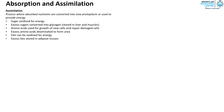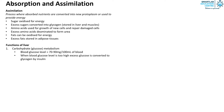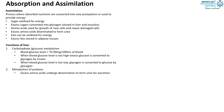The functions of the liver are as follows. First, carbohydrate metabolism: the normal blood glucose level is from 70 to 90 milligrams per 100 milliliters of blood. When blood glucose level is too high, excess glucose is converted to glycogen by insulin. When blood glucose level is too low, glycogen is converted to glucose by glucagon. Excess amino acids undergo deamination to form urea for excretion.